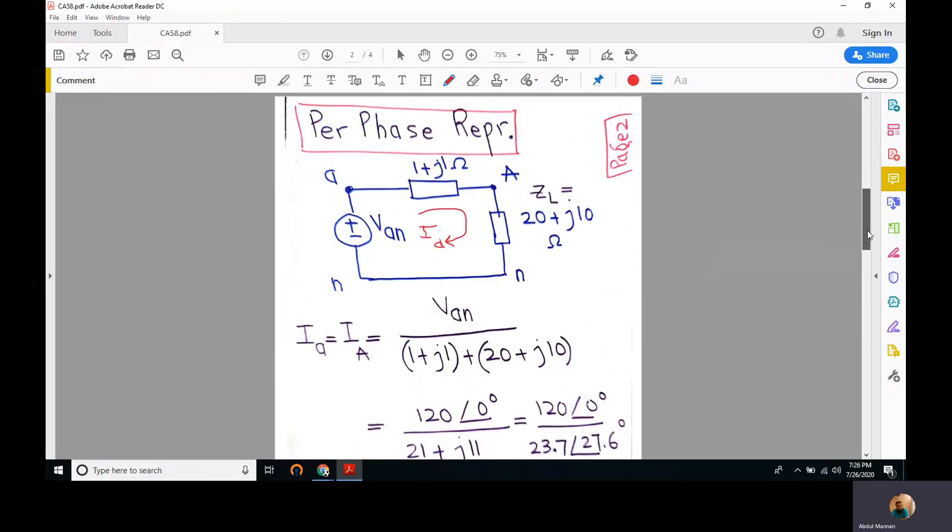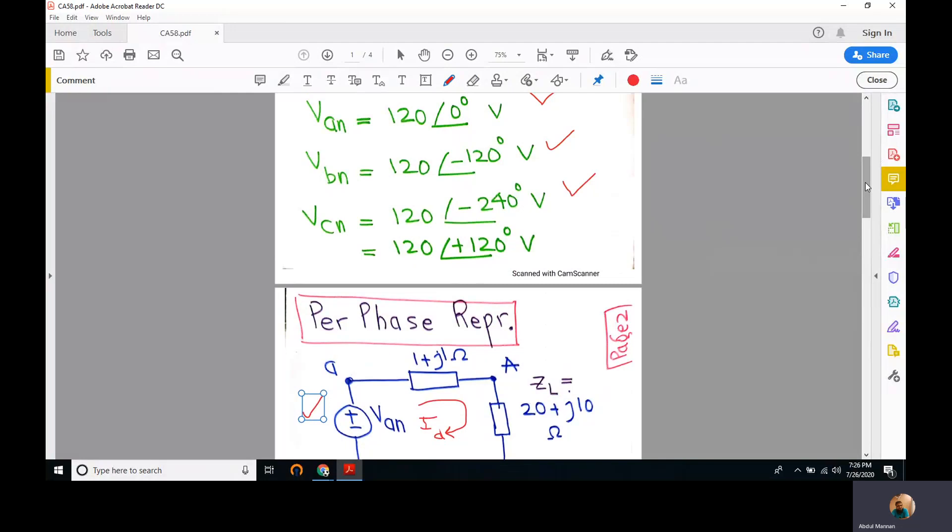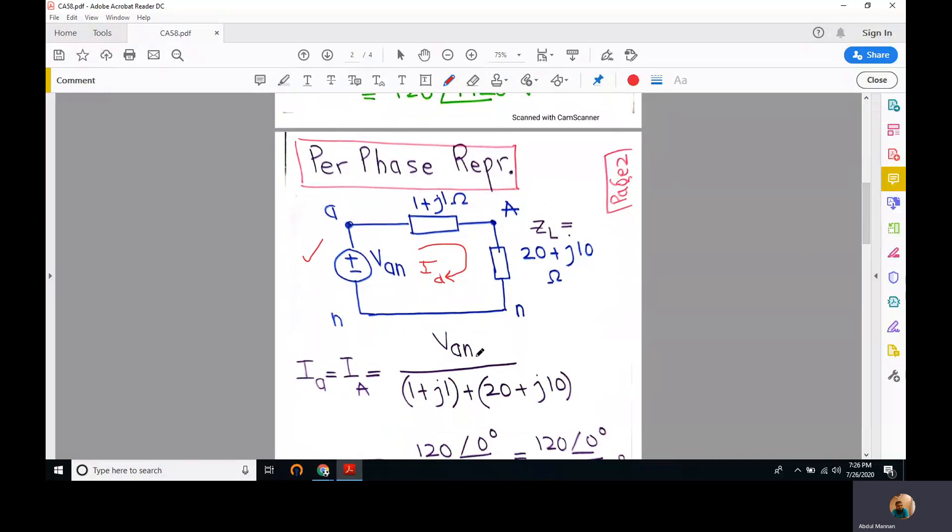To find Ia we will apply Ohm's law. It's a very straightforward calculation because we have this source, the value is given 120 at an angle of zero, and these impedances. So we apply Ohm's law, it's pretty straightforward.